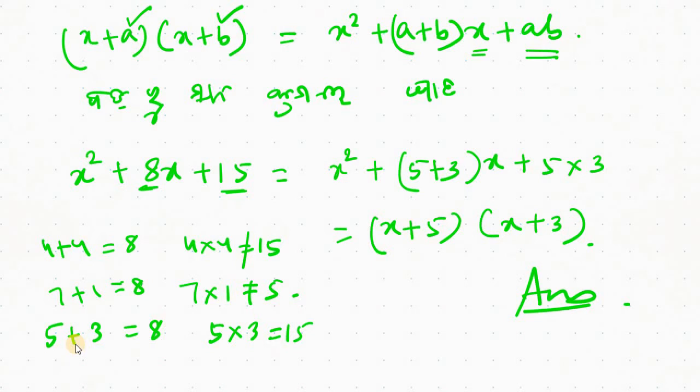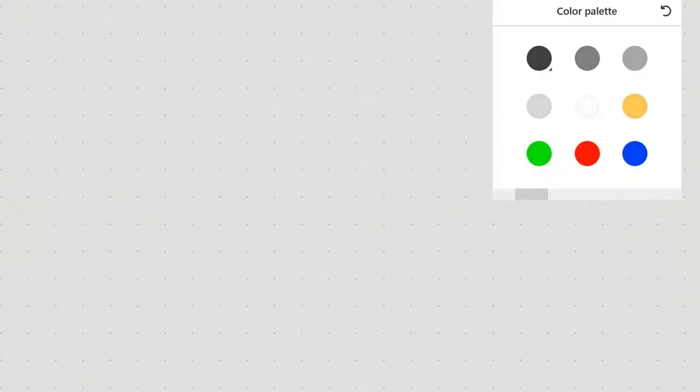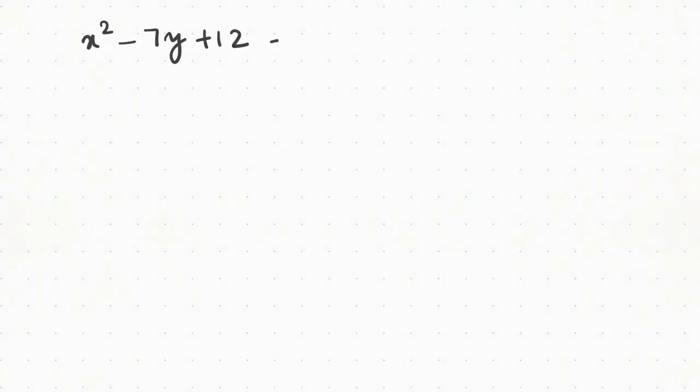So the answer is x plus 5 into x plus 3. We have the correct identity. We take the formula. Similarly, if you ask how it makes the negative one — we add the negative one, then we take the negative one. For example: x squared minus 7y plus 12.